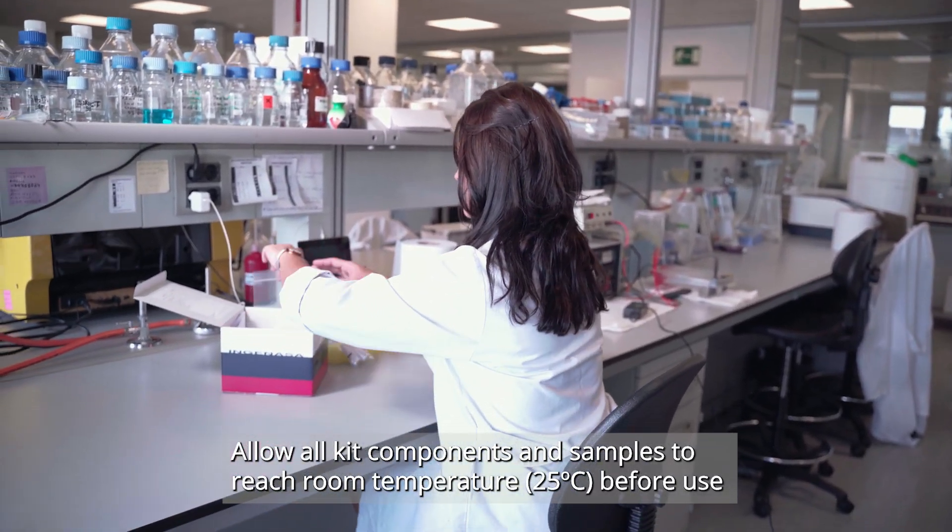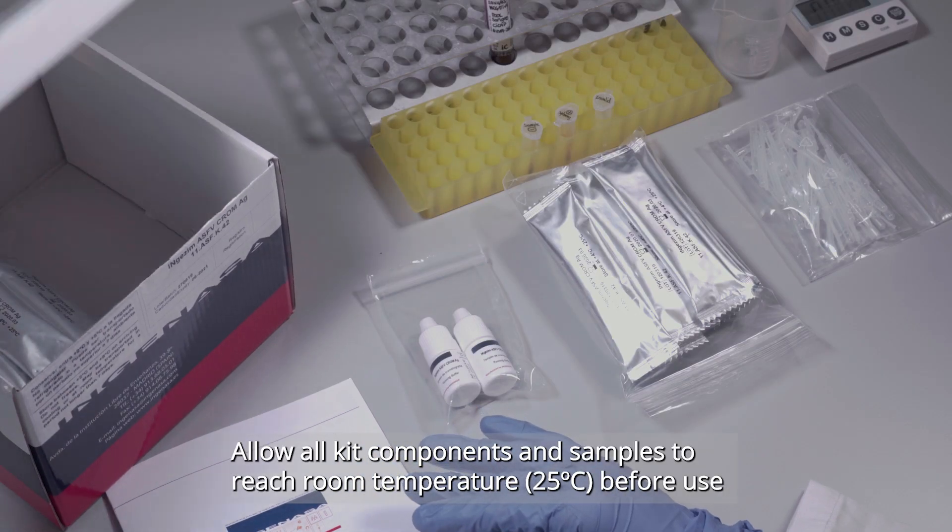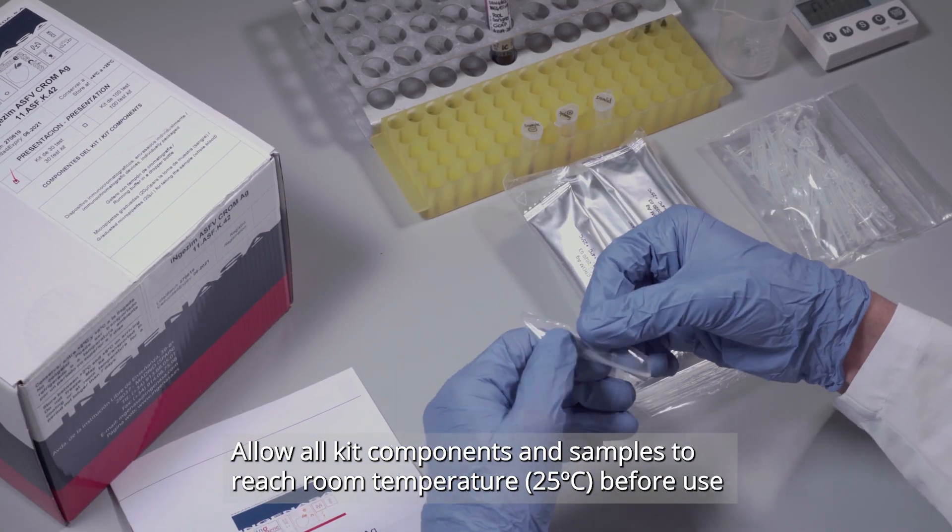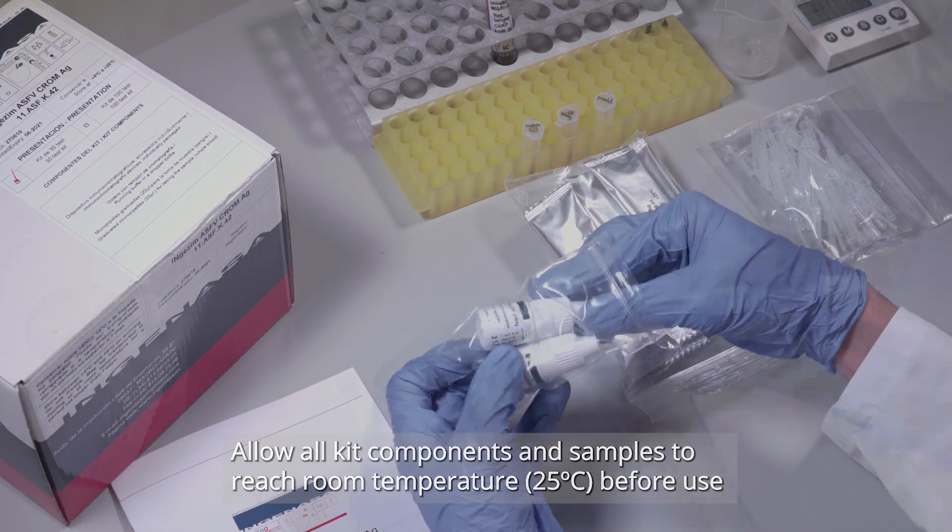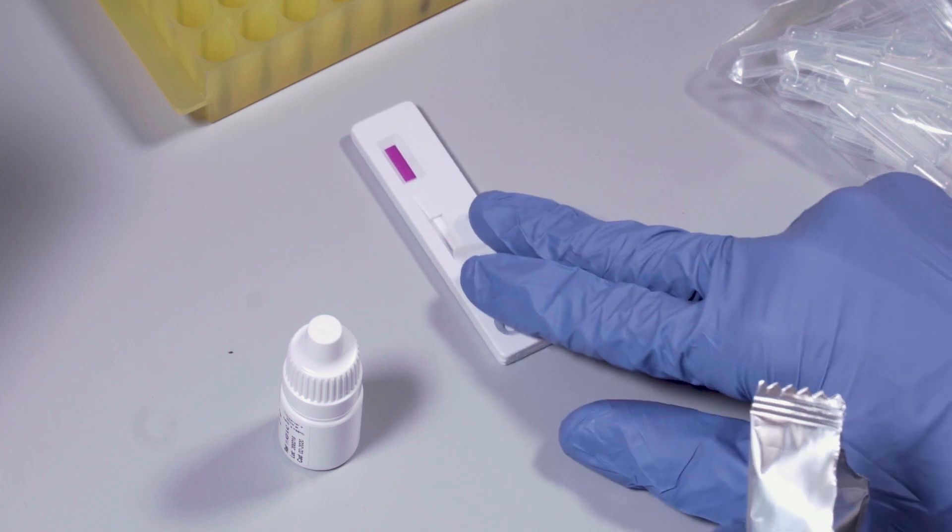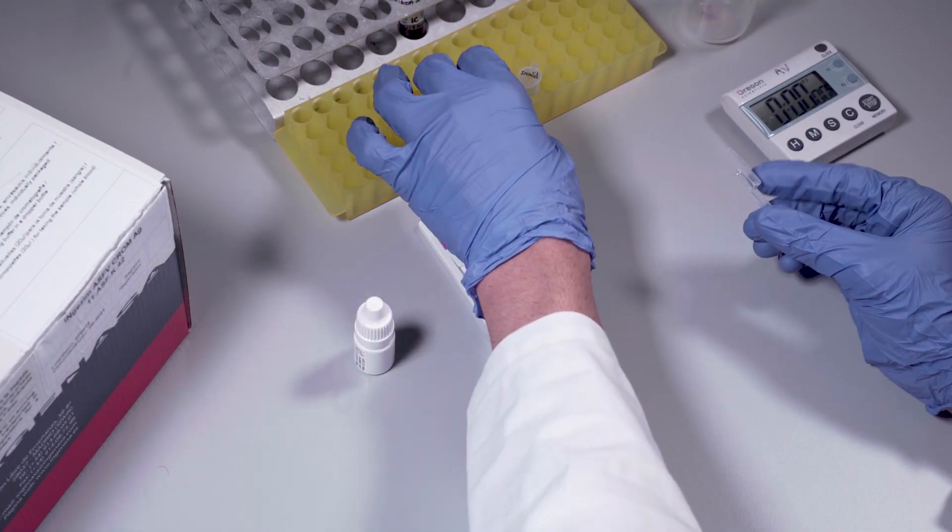Take the components from the box and allow them and the samples to reach room temperature. Remove the device from the aluminum pouch and discard the desiccant. Place the device on a flat surface.